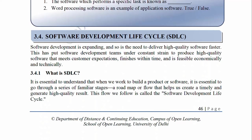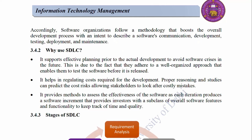Software development is expanding and so is the need to deliver high quality software faster. This has put software development teams under constant strain to produce high quality software that meets customer expectations, finishes within time, and is feasible economically and technically. 3.4.1 What is SDLC? It is essential to understand that when we work to build a product or software, it is essential to go through a series of familiar stages — a roadmap or flow that helps us to create timely and generate high quality results. This flow we follow is called the Software Development Life Cycle. Software organizations follow a methodology that boosts the overall development process with an intent to describe software communication, development, testing, deployment, and maintenance.